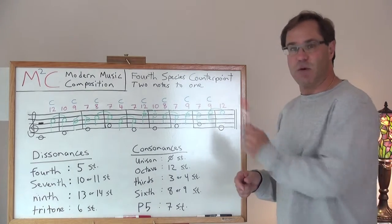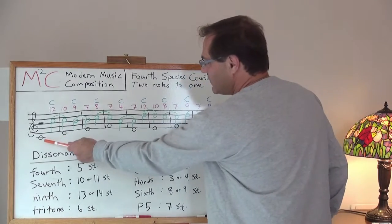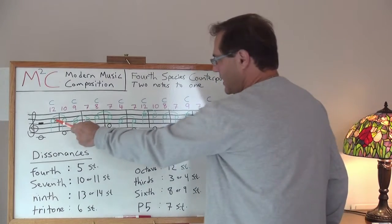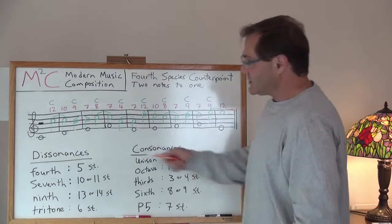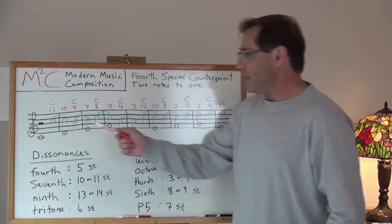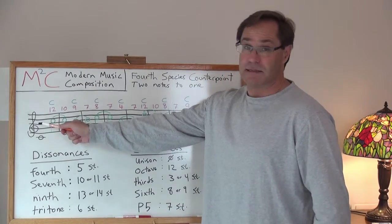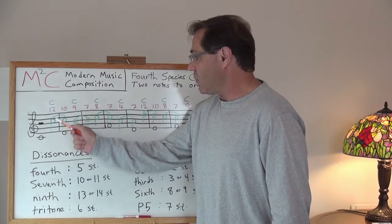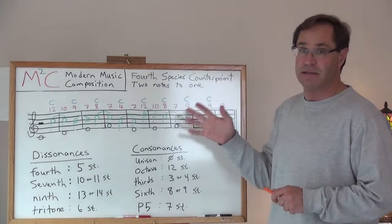So that shall segue into our first measure. In black, I've written out our cantus firmus, and in green is our Fourth Species Counterpoint. So let's start with the first measure. Traditionally, you want to start the downbeat with a rest, and so here I've got a half rest. And then, you're going to want to immediately go into a consonance. And in fact, it's pretty traditional too that the first consonance is an octave.